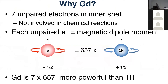An electron has a magnetic dipole moment 657 times greater than that of a proton. So for each electron, gadolinium is 657 times more powerful than hydrogen as a contrast agent. With seven unpaired electrons — seven times 657 is approximately 4,500 — gadolinium is about 4,500 times more powerful than hydrogen as a contrast agent on MRI.